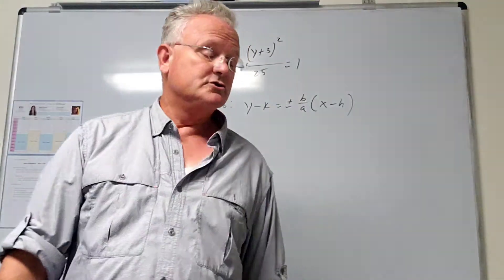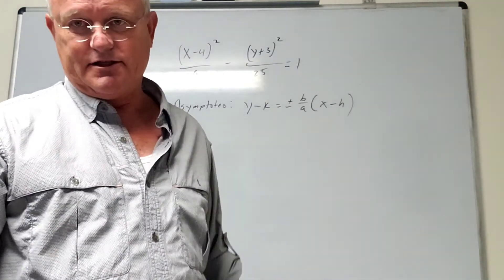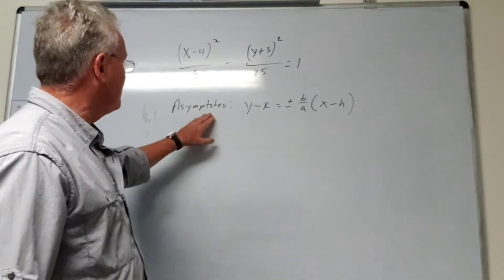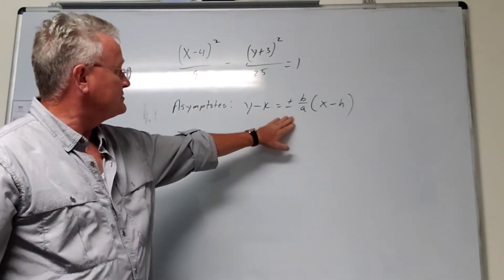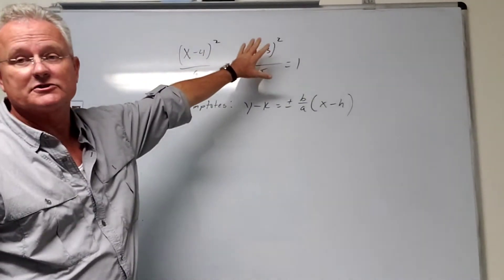So we want to use the formulas on your formula sheet that are on the left side. When we look at that, we see this is the formula for the asymptotes when we have x squared first as opposed to y squared.